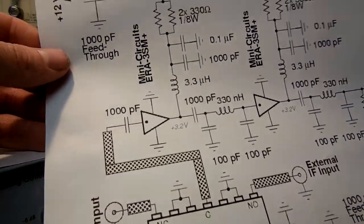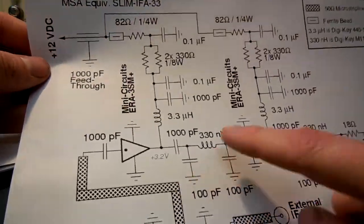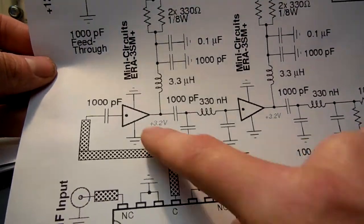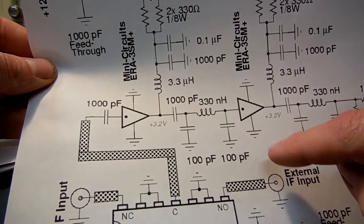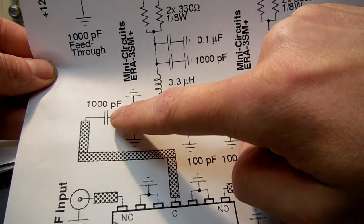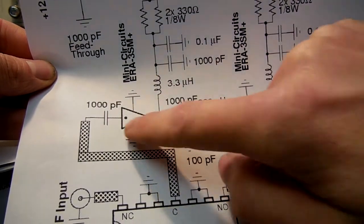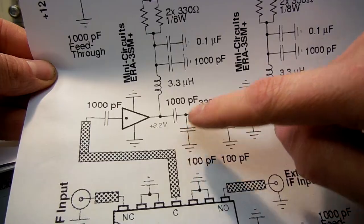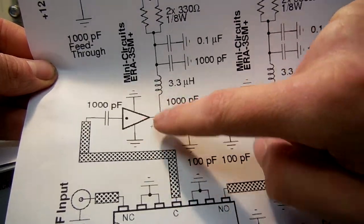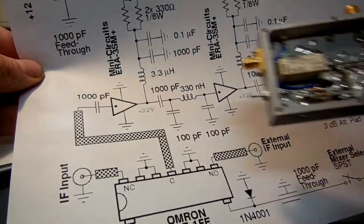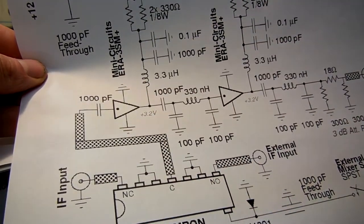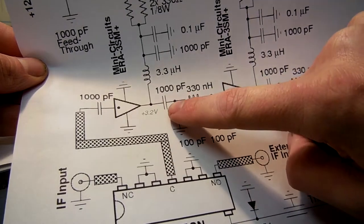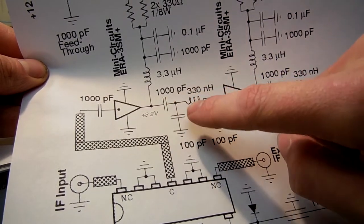We can see the two amplifier stages, ERA 3SM amplifier stages. We need DC blocking caps on the input because there is a DC bias voltage. These are four pin devices. They'll have two grounds, you want a nice solid ground plane. Then on the output, we also want another DC blocking cap.